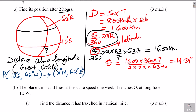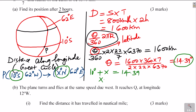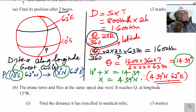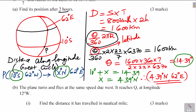Working this out: 10 degrees plus x degrees equals 14.39, so x = 4.39 degrees north. Therefore, the new position after two hours is 4.39 degrees north, 62 degrees east. That is how you find the position of the plane after two hours.